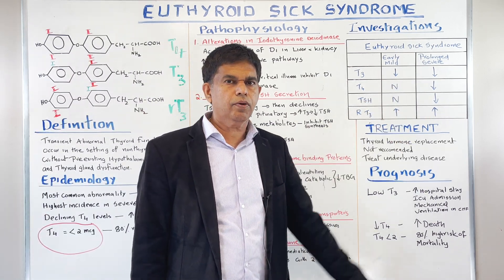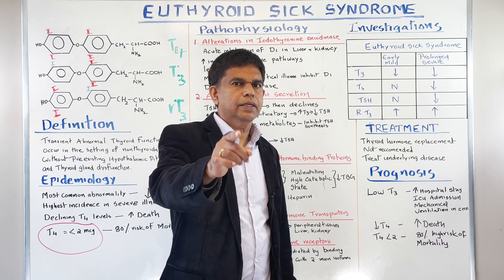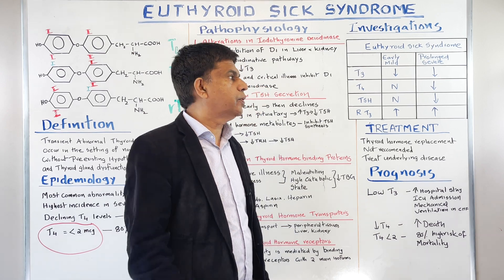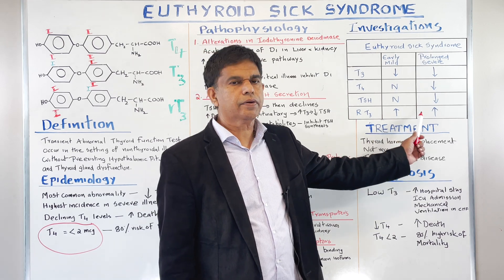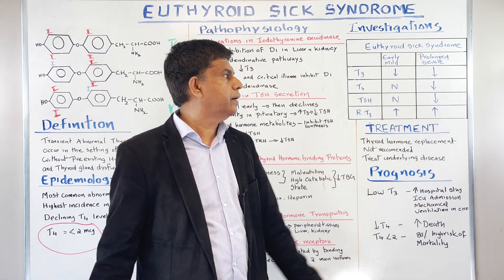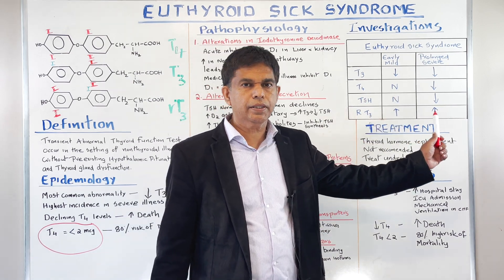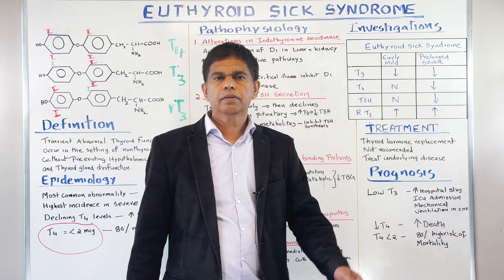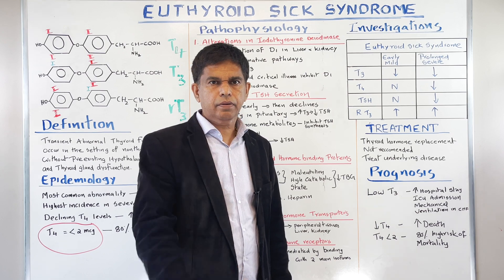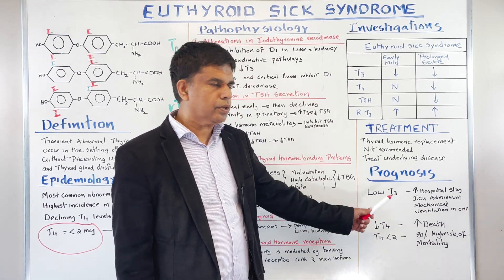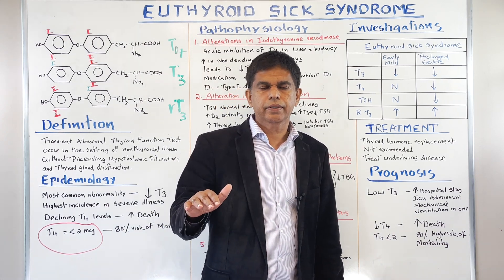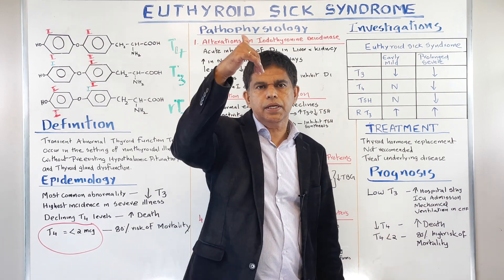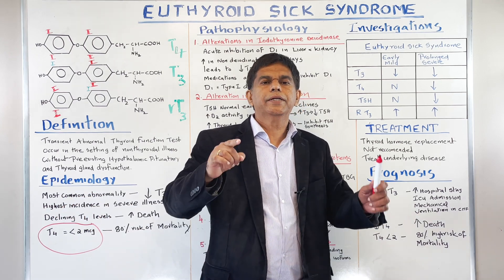Looking at the summary box: T3 goes down in early and late stages. Reverse T3 increases — it's the opposite. T4 and TSH are normal in the early stage but continue to decrease in the later stage. Treatment: no treatment — zero. Always treat the underlying cause. Prognosis: low T3 means poor prognosis, increased hospital stay, and ICU admission. If T4 is low, there is increased death. If T4 is less than 2, the patient is in critical danger.